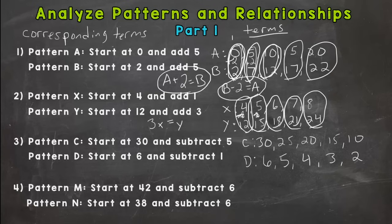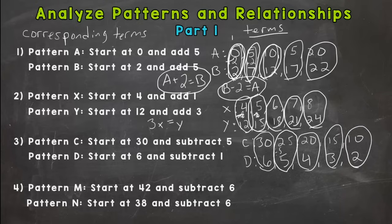All right, so it looks like C, we're starting with 30 and we're going down to 6. So we're decreasing in value. So it's either going to be subtraction or division. Let's try division. 30 divided by 5 is 6. Those are our corresponding terms. Let's try 25. Divided by 5 is 5. 20 divided by 5 is 4. 15 divided by 5 is 3. And 10 divided by 5 is 2. So our relationship is pattern C divided by 5 gives us our corresponding terms in pattern D.